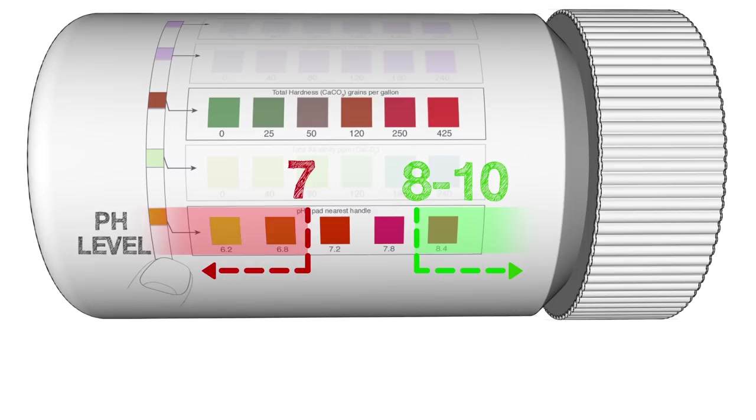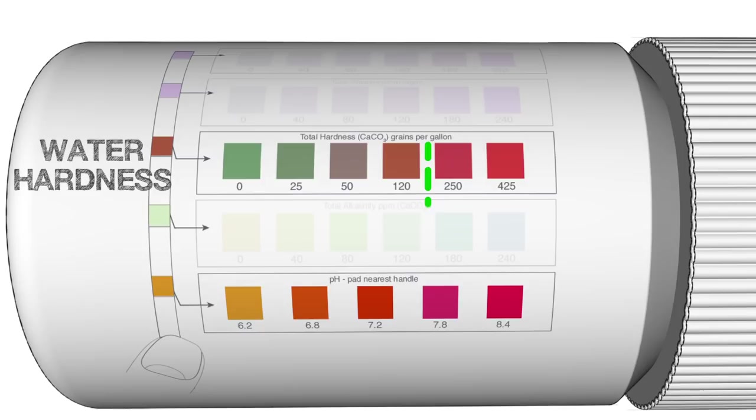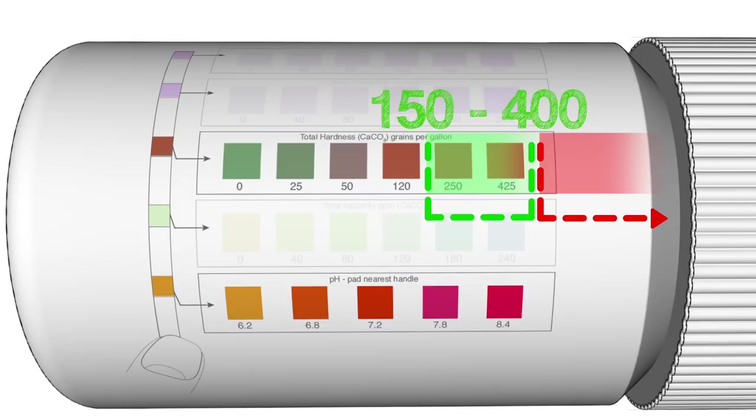A water hardness reading between 150 and 400 parts per million is acceptable for most coolants. Readings above this range also increase the chance of corrosion and bacterial contamination. And separation of the water and concentrate becomes more likely as water hardness becomes excessive.